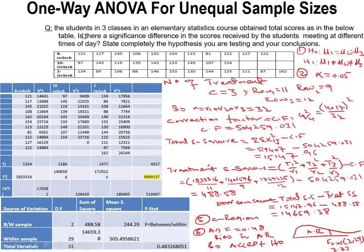Basically, there are three different classes — students in three classes in an elementary statistics course. At 8 o'clock, they collected this sample: 121, 117, and so on. In this sample, there are 11 observations.